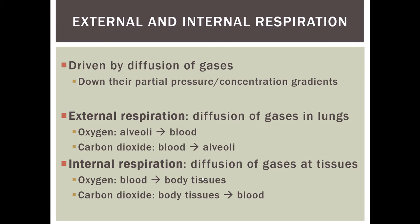Internal respiration is the exchange of oxygen and carbon dioxide at all of our body tissues. Oxygen is moving from the blood into all the body tissues so the body tissues can use it. Carbon dioxide, which is a waste product, moves out of those body tissues and into the blood in order to return to the lungs to be excreted. For oxygen to move from the lungs to the body tissues, and for carbon dioxide to travel from the body tissues to the lungs, it has to be transported through our circulatory system.